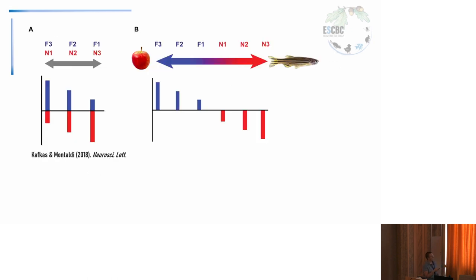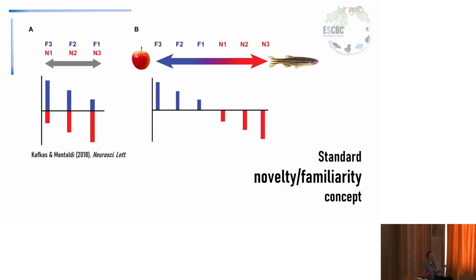In the literature, we can see one main view that wants a simple novelty-familiarity concept as a continuum — a stimulus that is considered novel cannot be, by definition, familiar, and vice versa. This view proposes a single mechanism in the brain that encodes and permits recognition of both familiar and novel stimuli. However, another view proposes two different pathways in the brain — two brain circuits that encode both familiarity and novelty with two different scales.